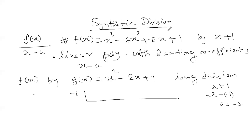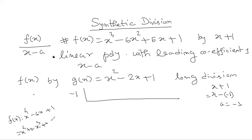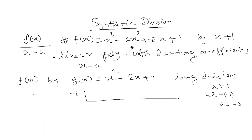Remember, we have to consider all possible powers of x in descending order. All powers are present here: 3, 2, 1, and 0. For example, if f(x) equals x to the power 4 minus 6x plus 1, the highest power is 4, but x cubed is not present. In that case we write it as 0 times x cubed plus 0 times x squared minus 6x plus 1, ensuring all coefficients are listed. So the coefficients here are 1, minus 6, plus 5, and 1.